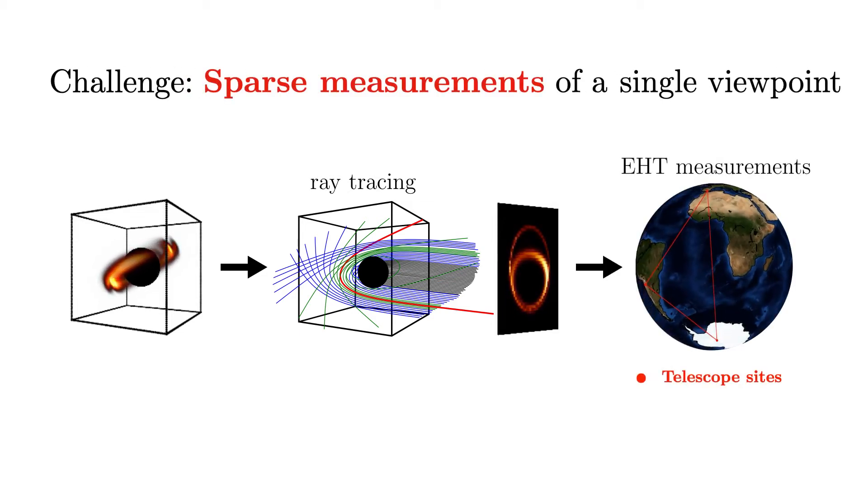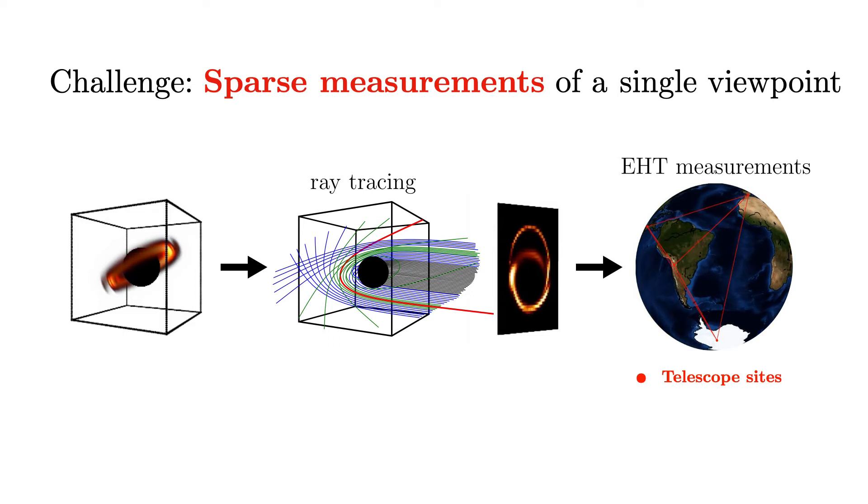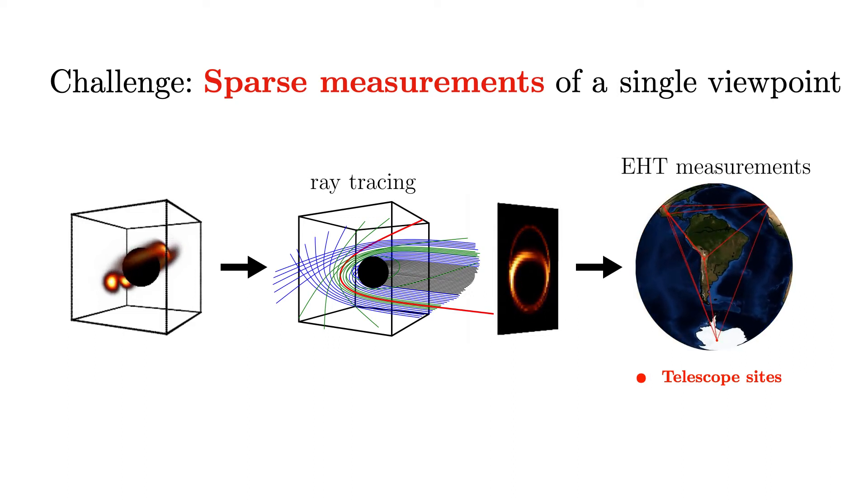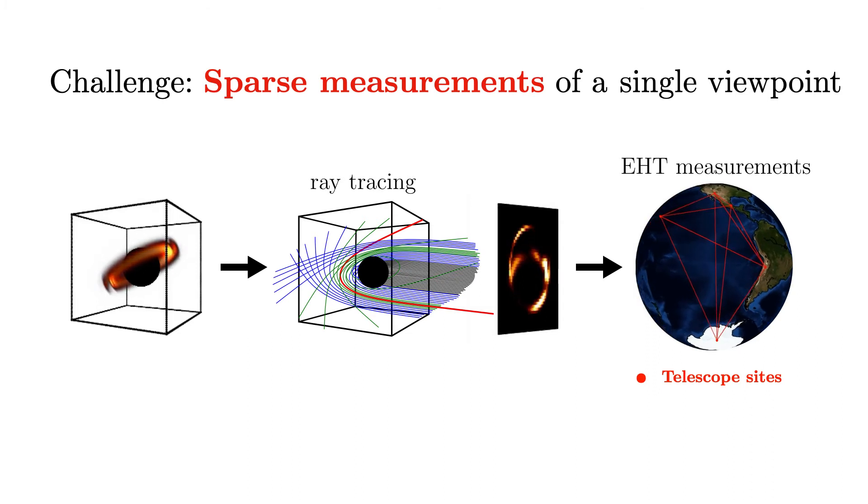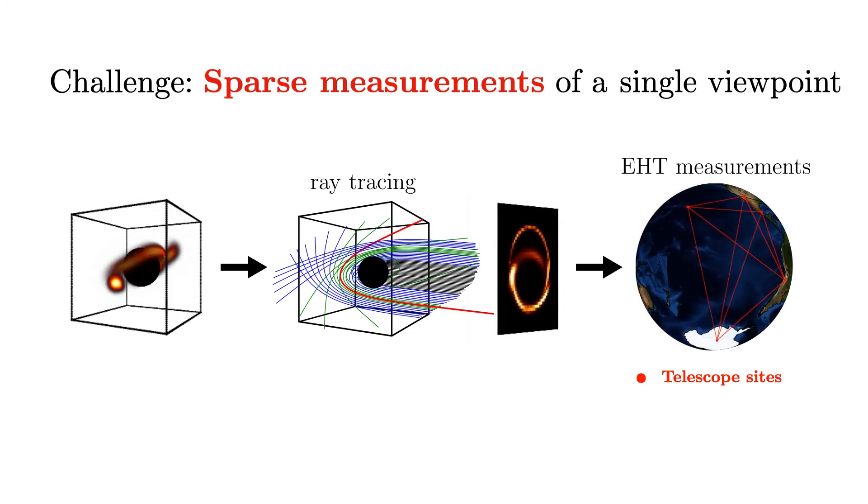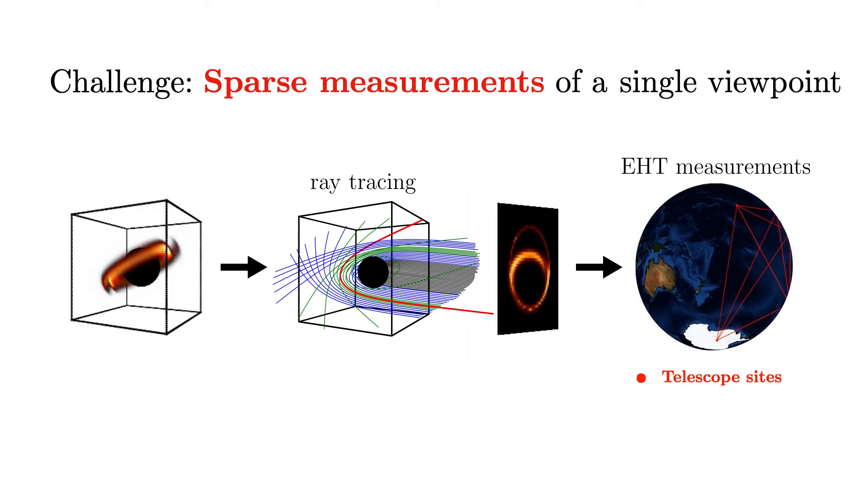Actually, the EHT doesn't directly observe the image. Rather, it only observes an extremely sparse set of spatial Fourier components at any given time. As the Earth rotates, different frequencies are probed, all the while the source is simultaneously evolving.